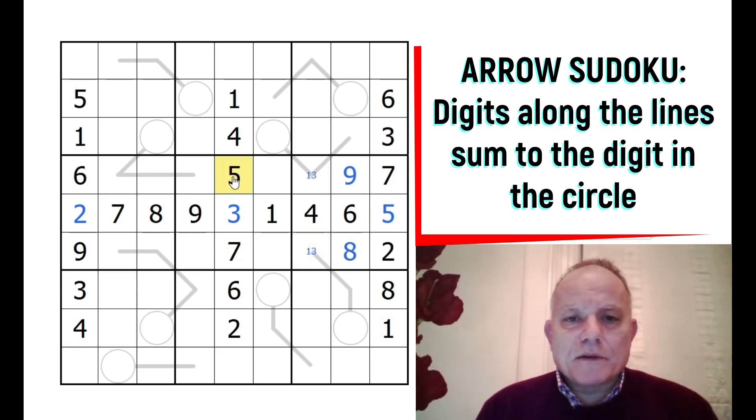Because of this 5, one of these has to be a 5. We've got three digits here adding up to this one that has to be 8 or 9. It can't be 8 because there's an 8 above it. This can't be 2 or 3. This has to be a 1, otherwise we're going to get too many.